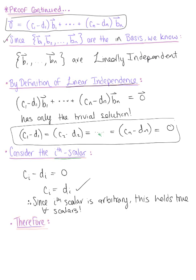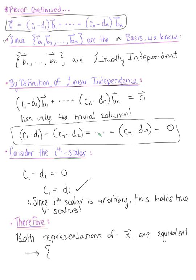Therefore, since both representations of vector x are equivalent, as we have demonstrated above, this implies that the scalars c sub 1 through c sub n are in fact unique. And we have finished our proof.